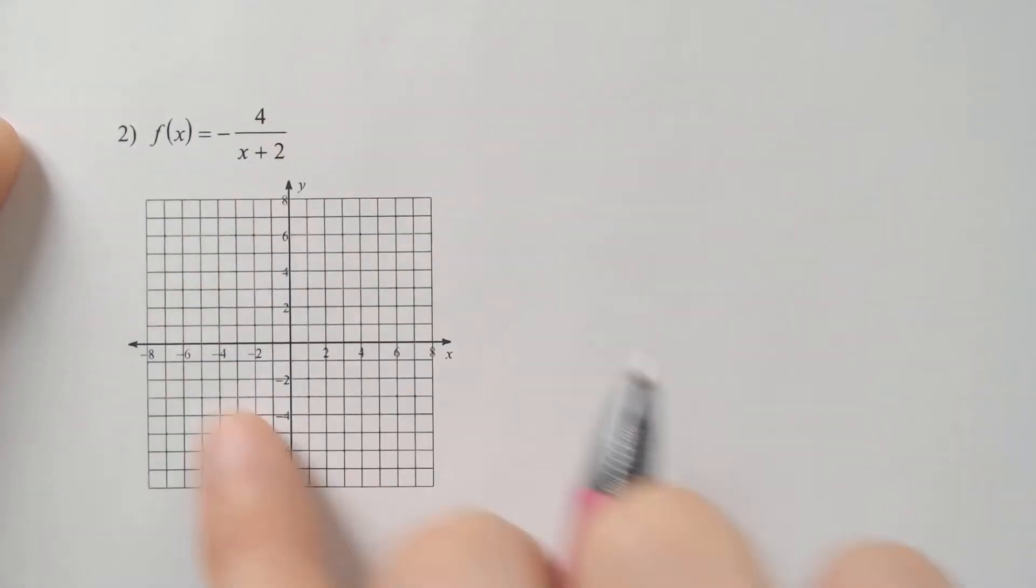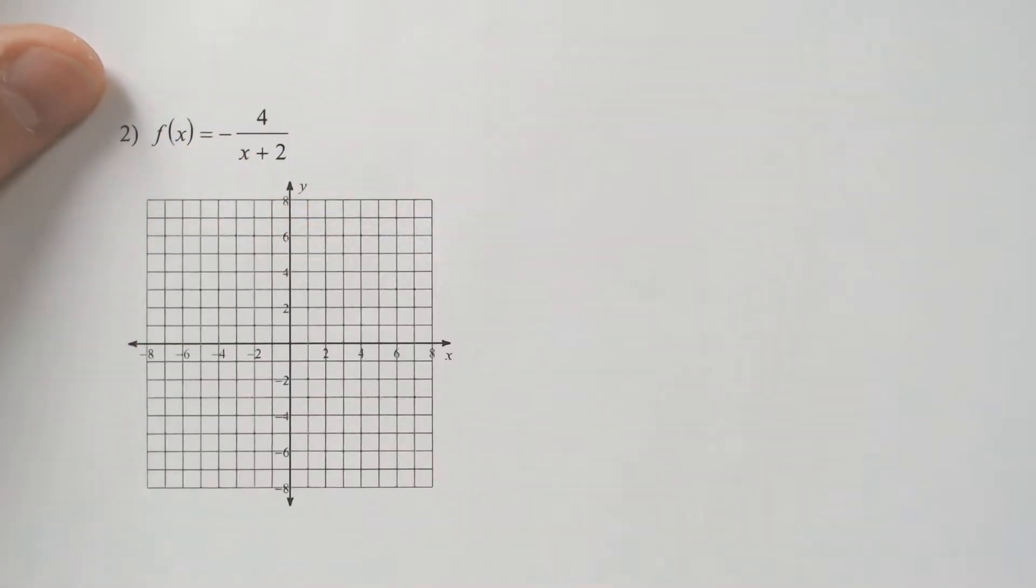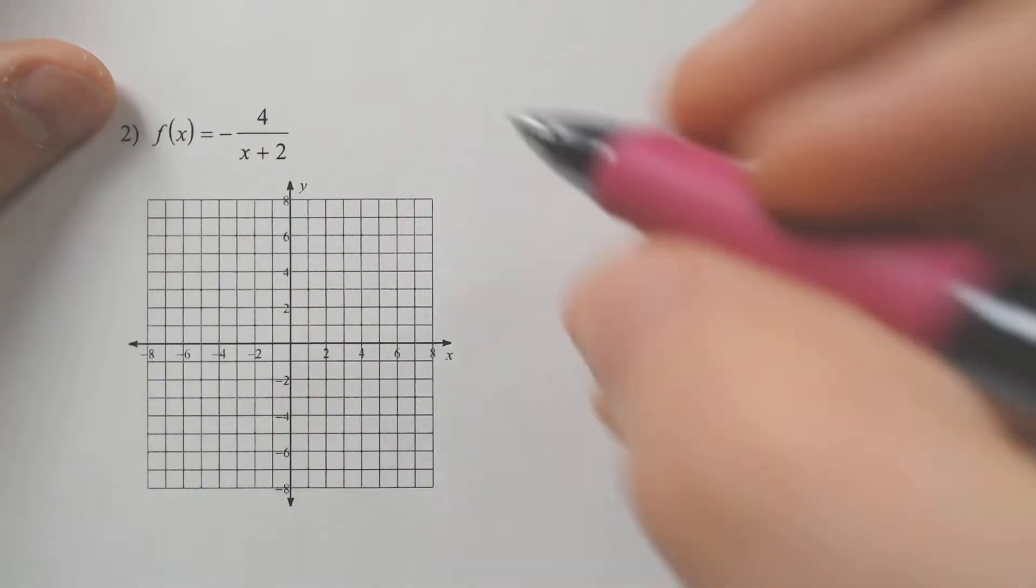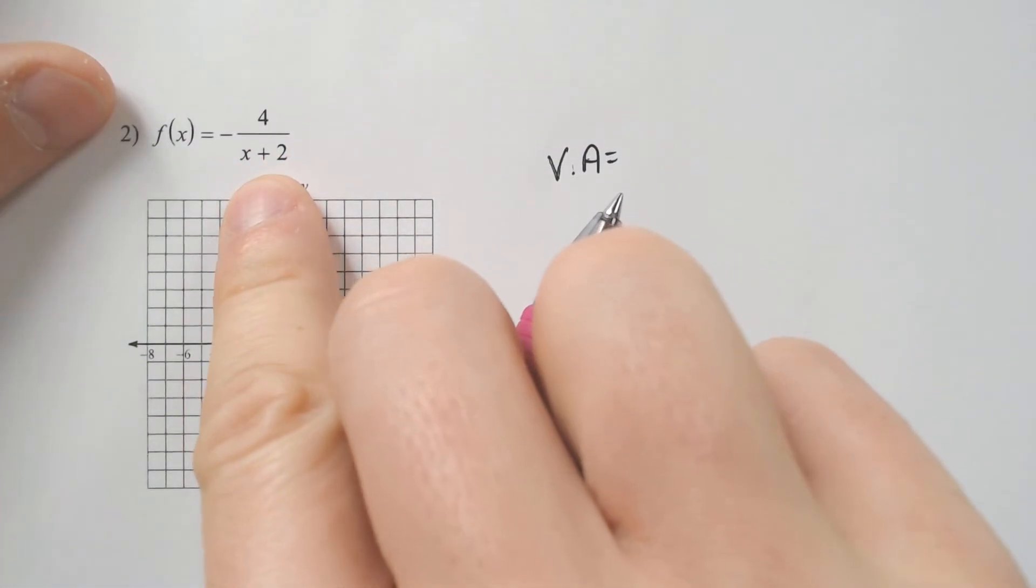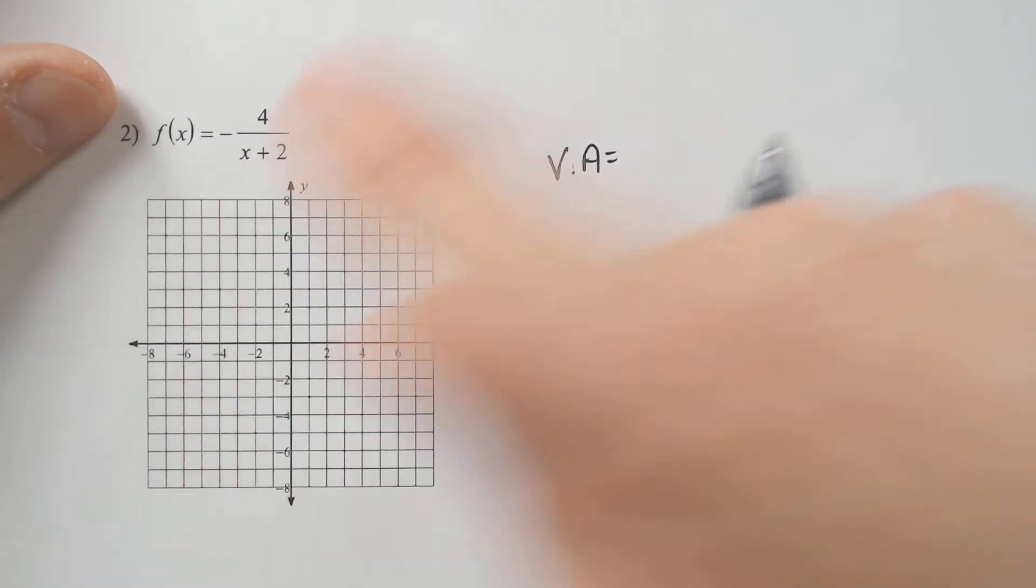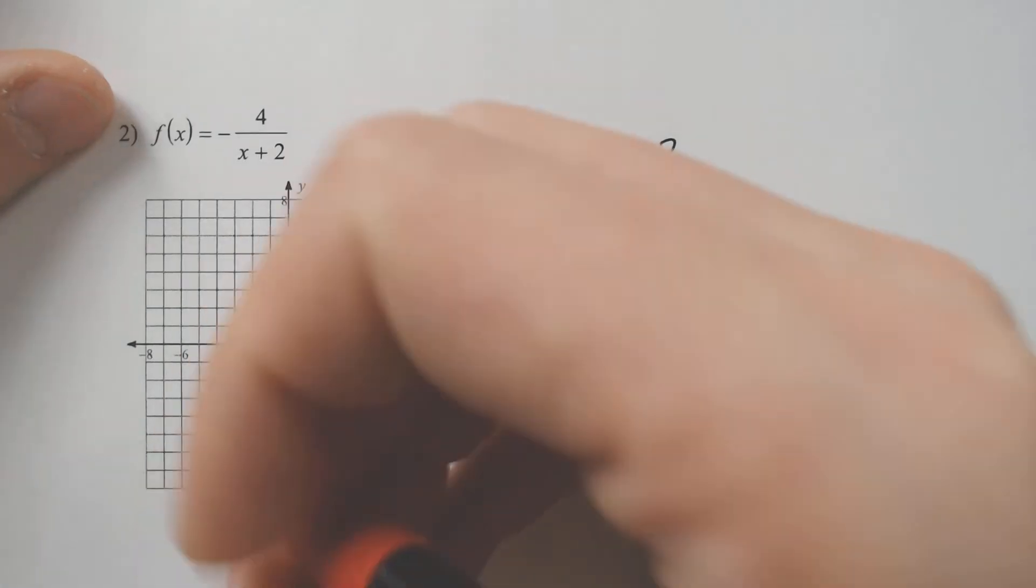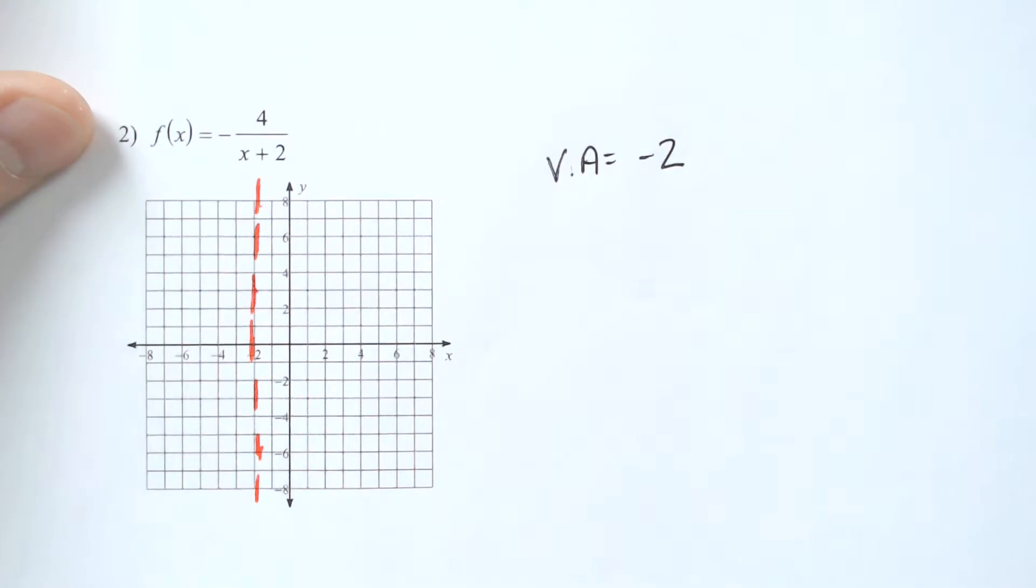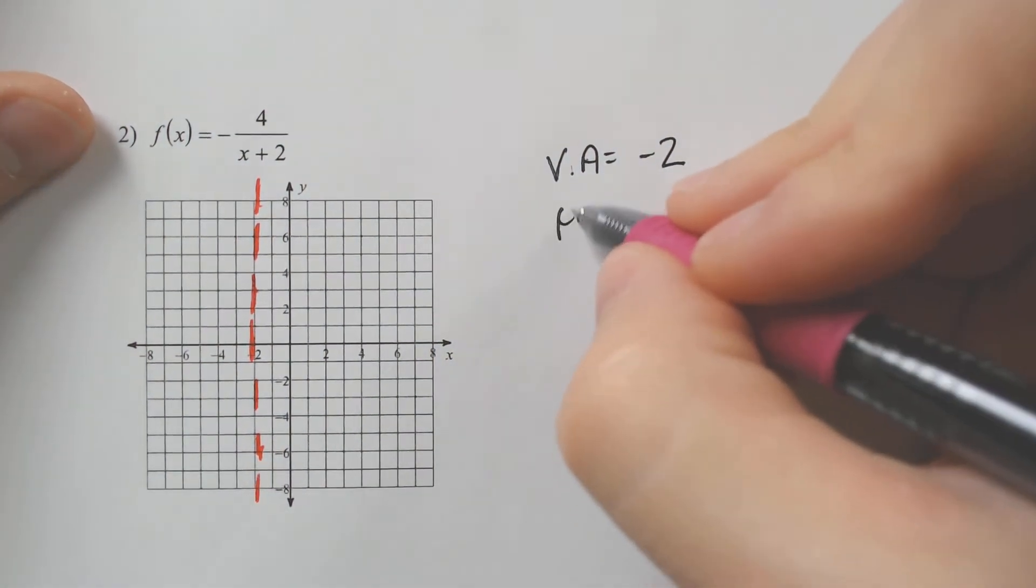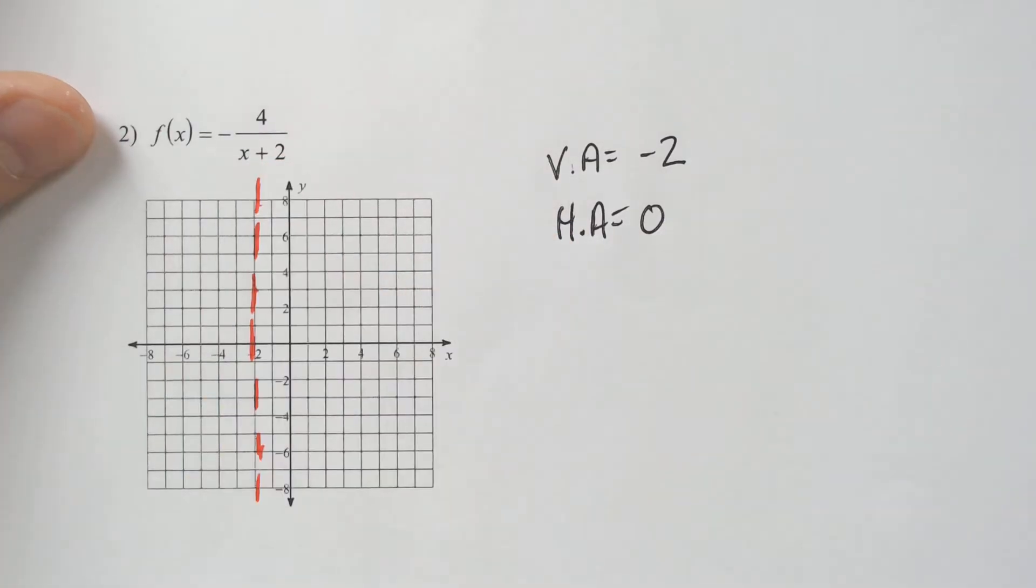The next variance is this problem, where it's almost the same thing, but you notice there's a negative in front, and that might change a few things, but not as much as you would think. So our vertical asymptote would be negative two, because x plus two, you would change the sign, you would get negative two, drawing it on the negative two. And then our horizontal asymptote, again, is going to be zero, because we have a smaller exponent over a bigger exponent.